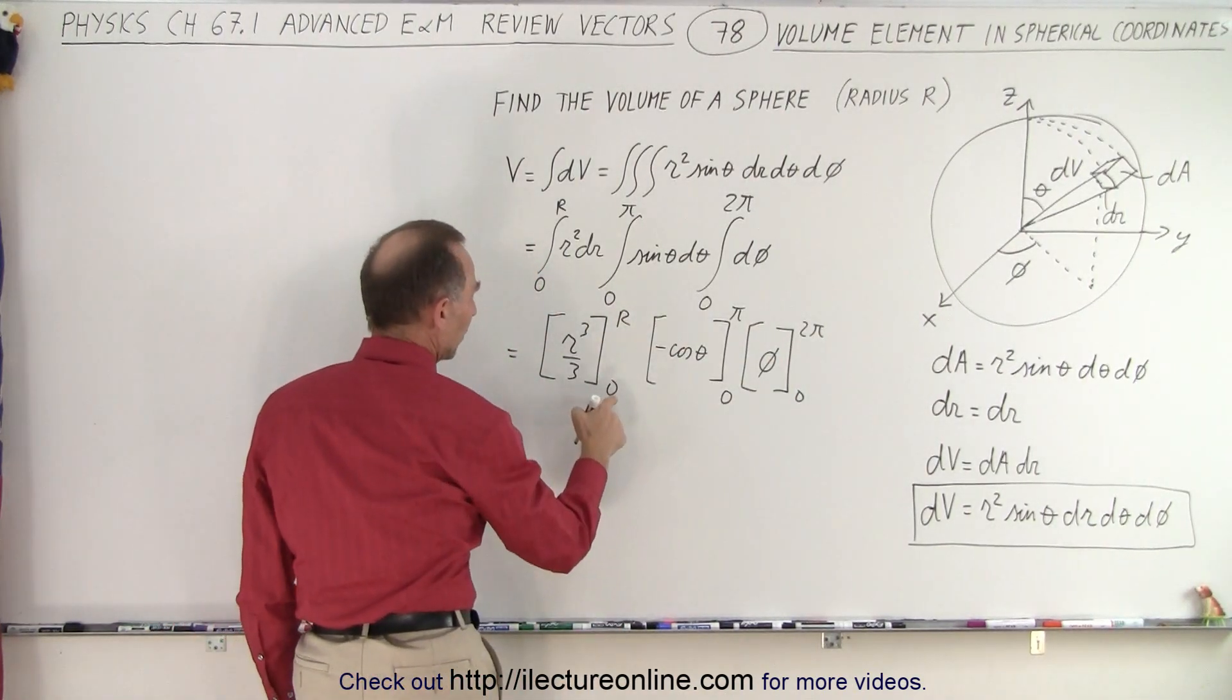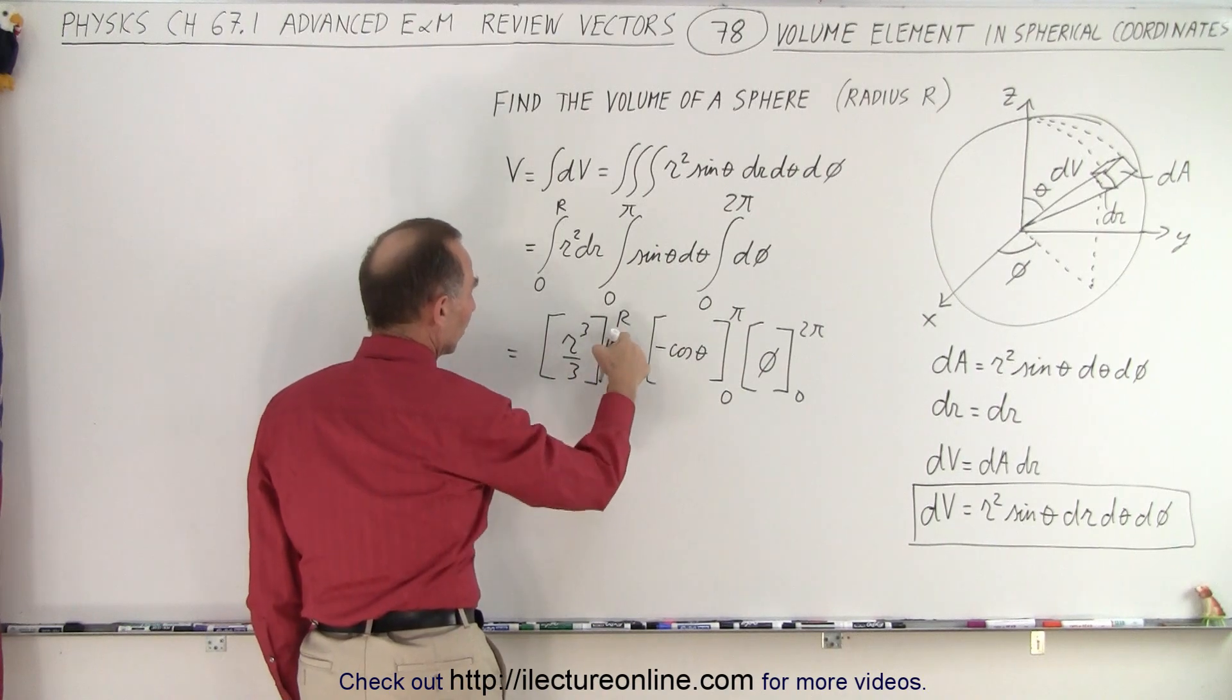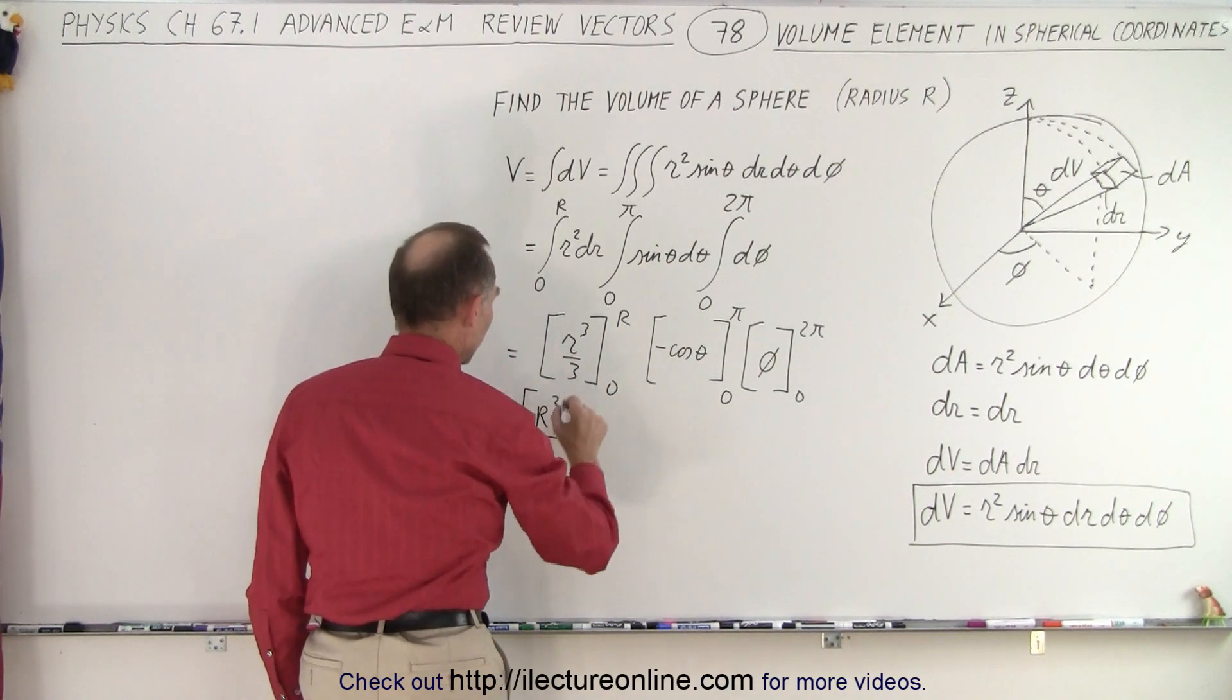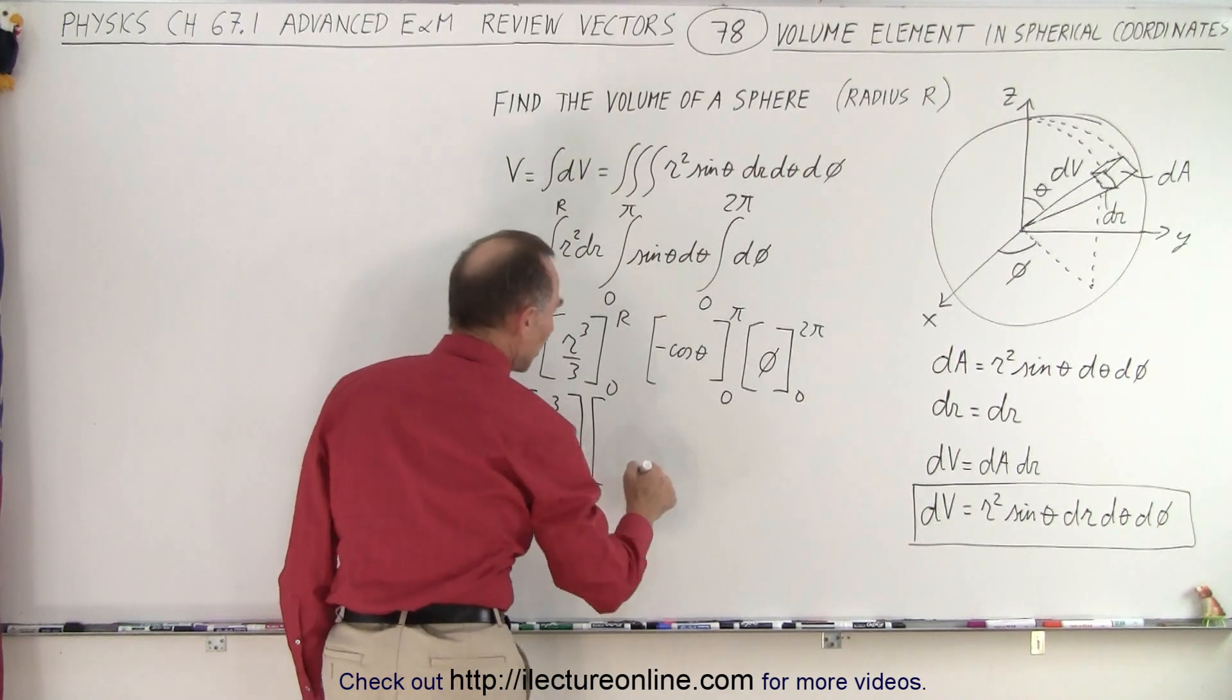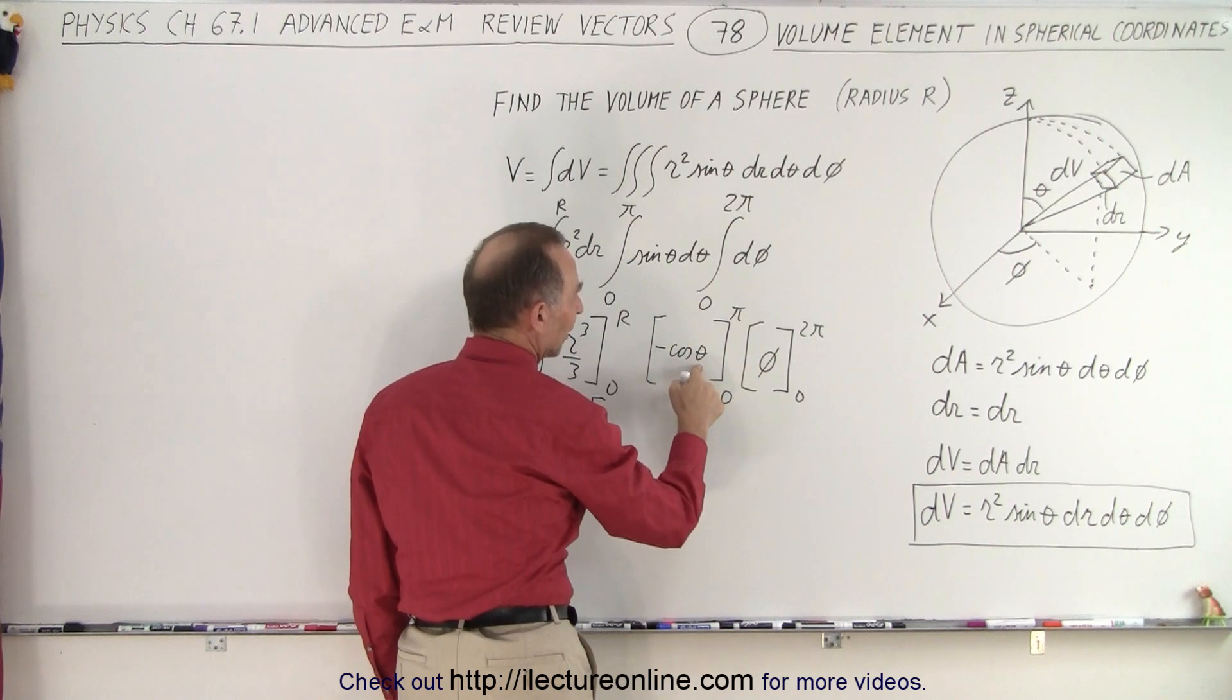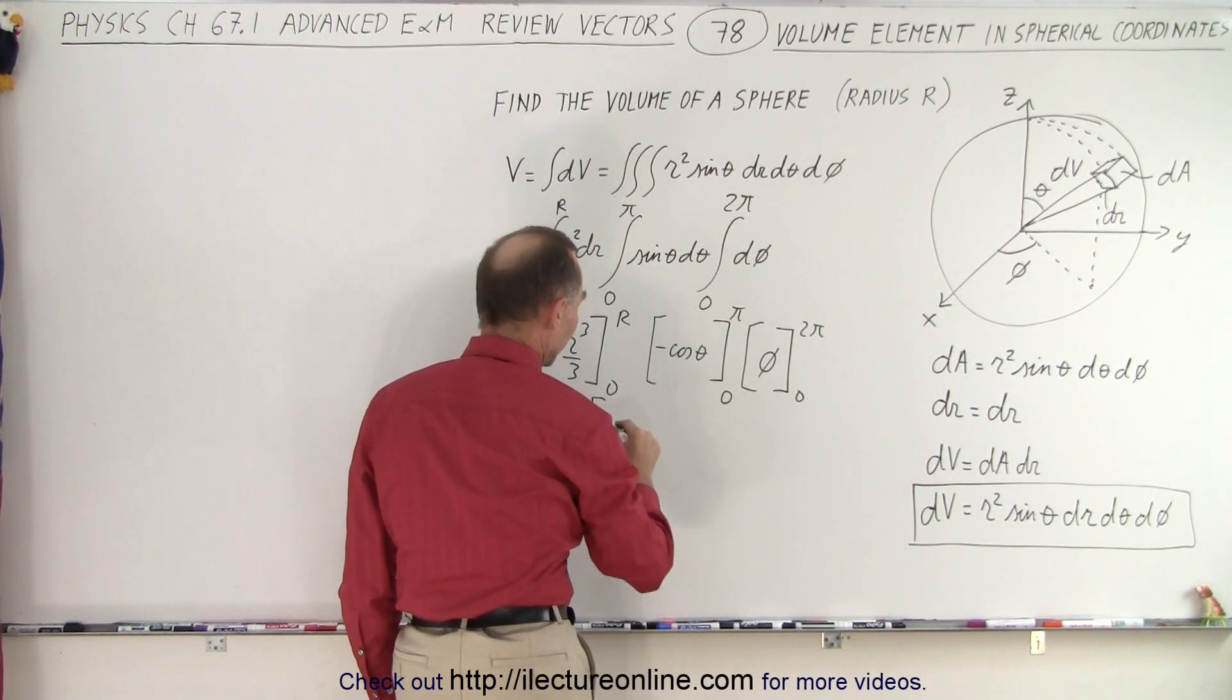That means that this is equal to when we plug in the lower limit we get zero. Plug in the upper limit we get r cubed over three. Multiply the times. When we plug in the upper limit we get minus the cosine of pi. Well the cosine of pi is negative one times a minus is a positive one.